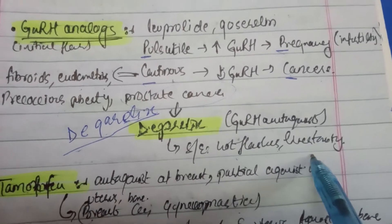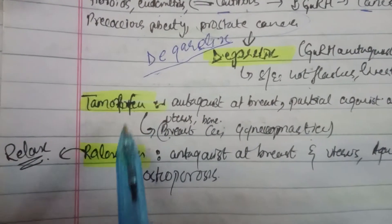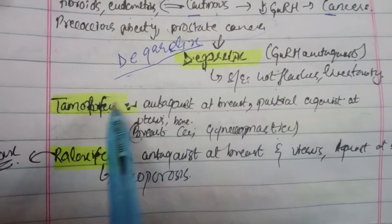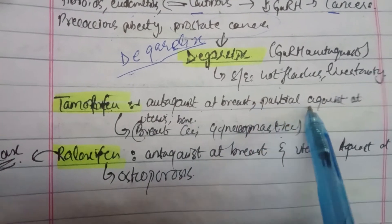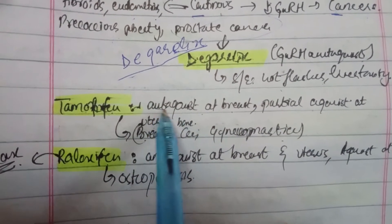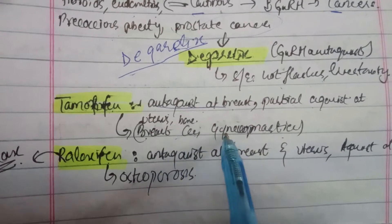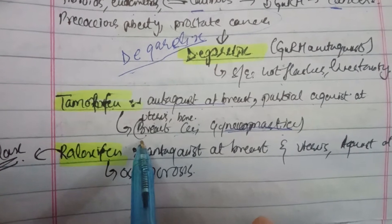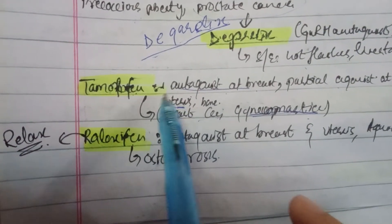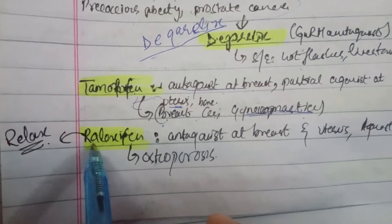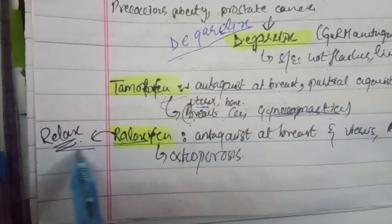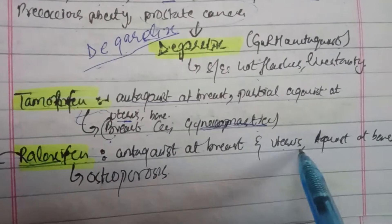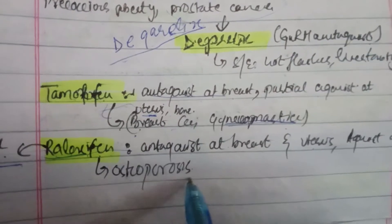Tamoxifen is an estrogen receptor antagonist at the breast, and a partial agonist at the uterus and bone. It is used in breast cancer and gynecomastia. Because it is an agonist at the uterus, it can increase the risk of endometrial cancer. Raloxifen — think 'relax' — is an antagonist at both breast and uterus, and agonist only at bone, used purely for osteoporosis in postmenopausal women.